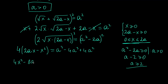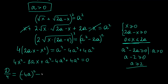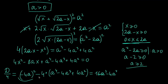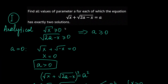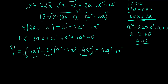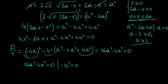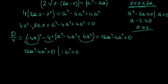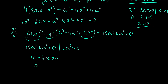Let's rearrange into a standard quadratic equation and find its discriminant — specifically the quarter-discriminant, because of the even coefficient. That gives 16A³ − 4A⁴. For the equation to have exactly two solutions, the discriminant must be positive, so I need to solve 16A³ − 4A⁴ > 0. Dividing both sides by A³ (which is positive), we get A < 4.